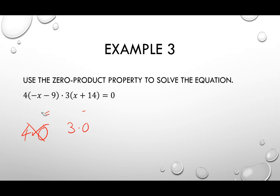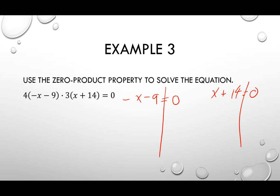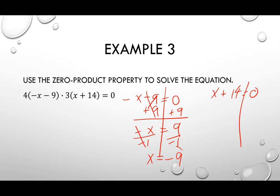They're not really necessary. You can distribute and solve that way, and you will still get the answer, but you're just creating more work. To keep it simple, we just need to figure out when negative X minus nine equals zero and when X plus 14 equals zero. Adding nine to both sides gives negative X equal to nine. Then dividing by negative one gives X equal to negative nine. That's one solution. For the second piece, subtract 14 to get X equal to negative 14.